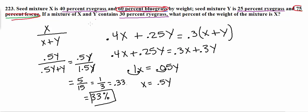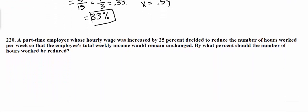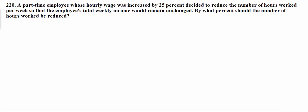So now let's take a look at a similar problem, another applied problem. Scroll down. Number 220, I believe. Okay. So this question says, a part-time employee whose hourly wage was increased by 25% decided to reduce the number of hours worked per week so that the employee's total weekly income would remain unchanged. By what percent should the number of hours worked be reduced?